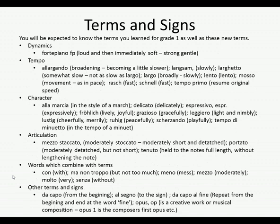On to terms and signs. You'll be expected to know the terms you learned for Grade 1 as well as these new terms. Dynamics mean loud or soft. You're going to need to learn forte piano, indicated with an F and a P, which tells you to go loud and then immediately soft — strong, then strong to gentle. You might have one note with an F and a P, meaning you start the attack of the note really loudly and then quickly take it to soft.